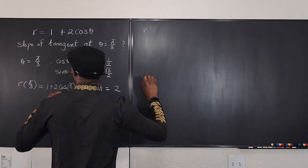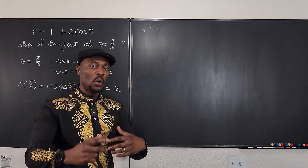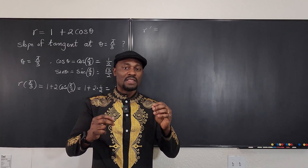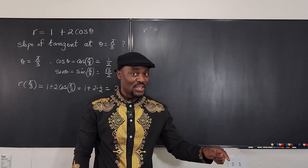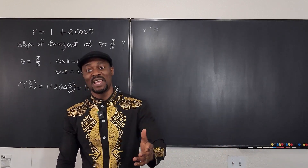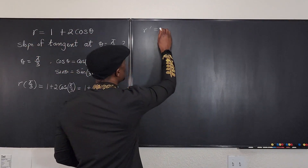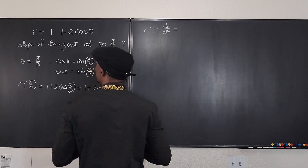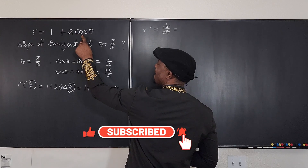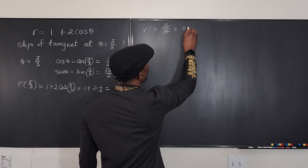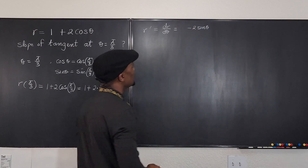Now what is r prime? r prime is the derivative dr/dθ. Remember, in polar curves the independent variable is theta — nothing else. Any differentiation you do must be with respect to theta. So dr/dθ: differentiating 1 plus 2 cosine theta with respect to theta, the constant goes to zero and the derivative of cosine is negative sine, so it's negative 2 sine theta.